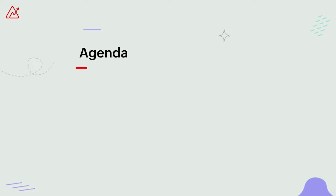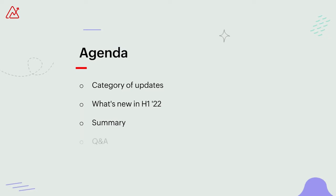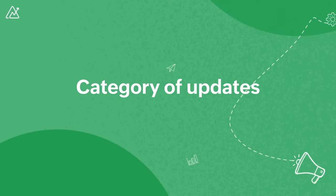So here's the agenda for today. Firstly, we have the category of updates, which would give you a bird's eye view of all the various improvements and developments we've brought across different analytical functionalities. It would be followed by a detailed explanation of all the key updates. And then we'd be moving on to the summary, where we'd give you a quick recap of all the points covered. And before concluding the webinar, we'd have an interactive Q&A. So without further ado, let's get started by looking at the category of updates.